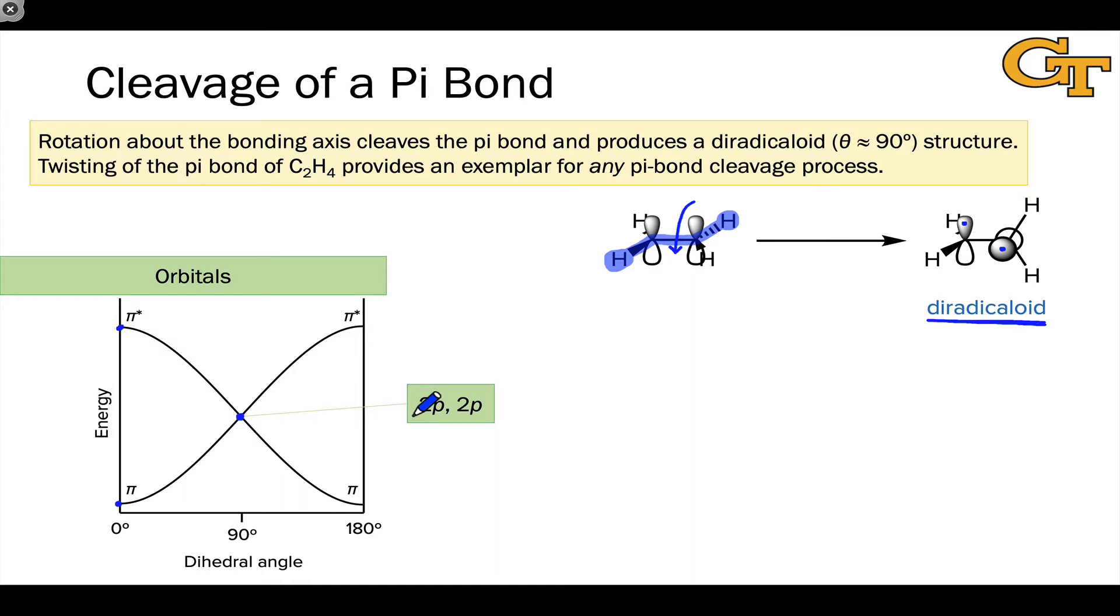It could be argued that this is just a pure diradical exactly at this geometry, although at all the geometries between 0 and 90 degrees we're really dealing with diradicaloids. The only point where we're dealing with a pure diradical is at exactly 90 degrees with those two p orbitals now degenerate, perpendicular, pointing in different directions in space.